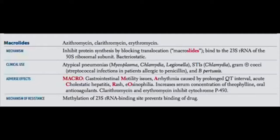Now moving to the 50S subunit drugs — macrolides include erythromycin, azithromycin, and clarithromycin. They block translocation of the ribosome at the 50S subunit. They're excellent for atypical pneumonia; azithromycin is the drug of choice for atypical pneumonia. An adverse effect is that they lengthen the QT interval, and a prolonged QT can progress to torsades de pointes.